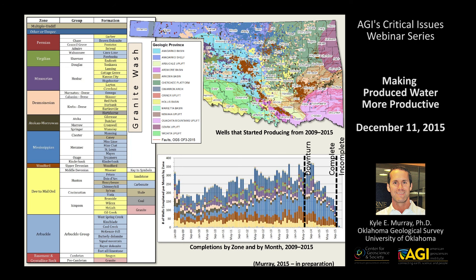The first slide unfortunately contains a lot of information, but it sets the tone for my talk and will get you oriented to the state of Oklahoma and the formations of interest that are producers of oil and gas, and therefore producers of produced water and saltwater. The following slides will be fairly self-explanatory once you have the groundwork. Let's start by looking at the stratigraphic column on the left side of the slide, which shows about 54 of the most prominent oil and gas producing formations in Oklahoma.